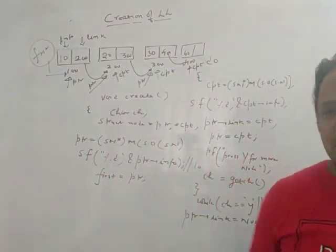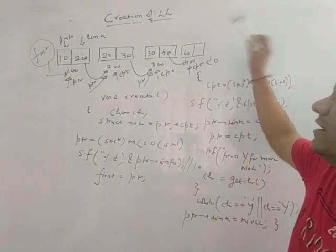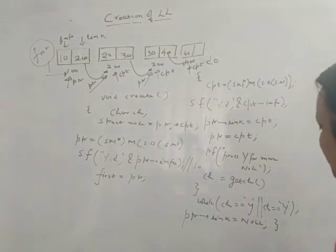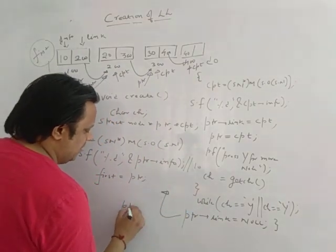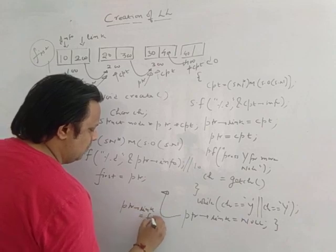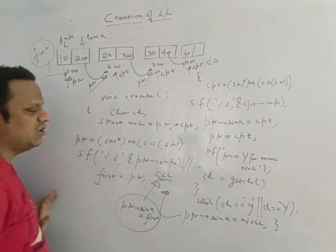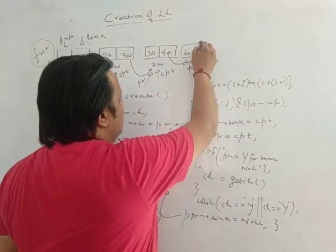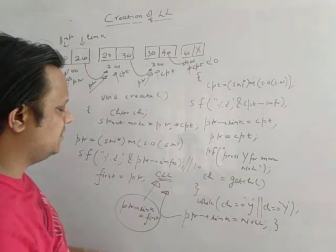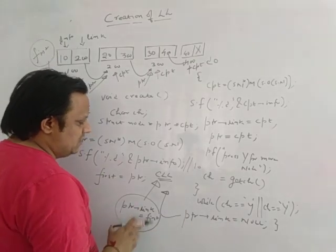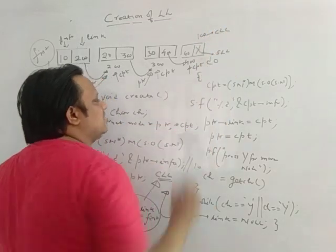Almost the entire code is the same for a circular linked list — only one change is required. In a circular linked list, the link part of the last node should contain the address of the first node. So you simply replace ptr->link = NULL with ptr->link = first. When you write ptr->link = first, it stores address 100, making the list circular. This one line change converts a single linked list into a circular linked list.